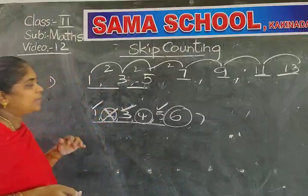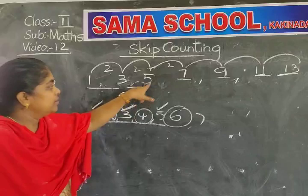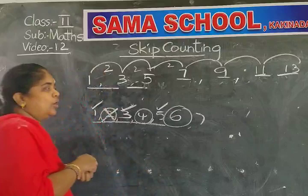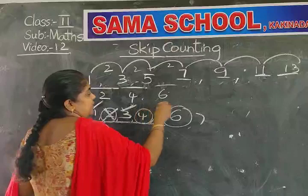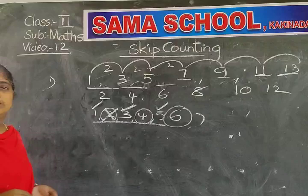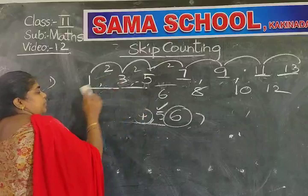Observe the pattern once: 1, 3, 5, 7, 9, 11, and 13. In all these, we didn't write: 2, 4, 6, 8, 10, and 12. In this pattern, we skipped one number and wrote the second number.